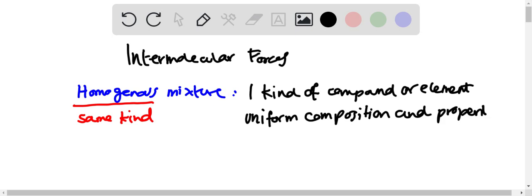This is why air is a perfect example of a homogeneous mixture - it has the same composition of gases such as nitrogen, oxygen, and carbon dioxide throughout.